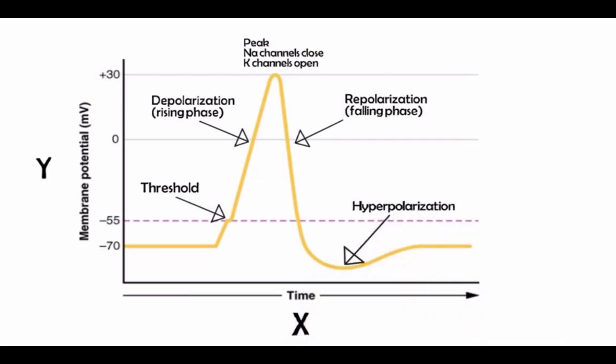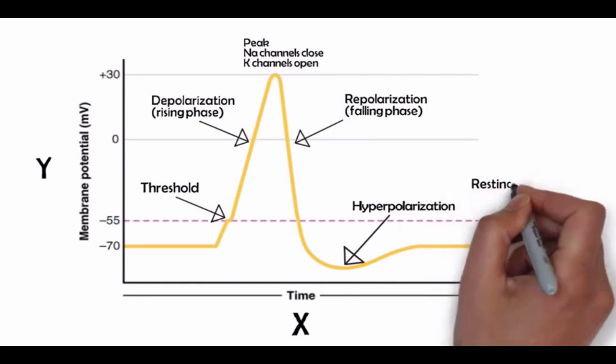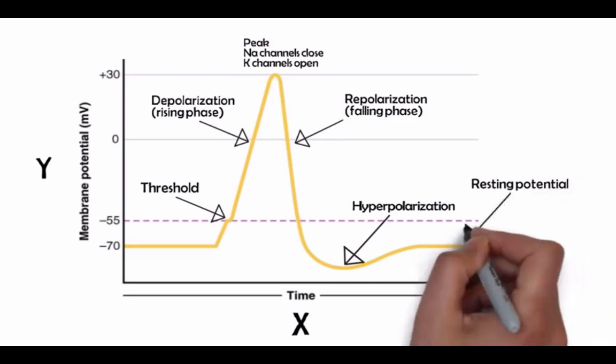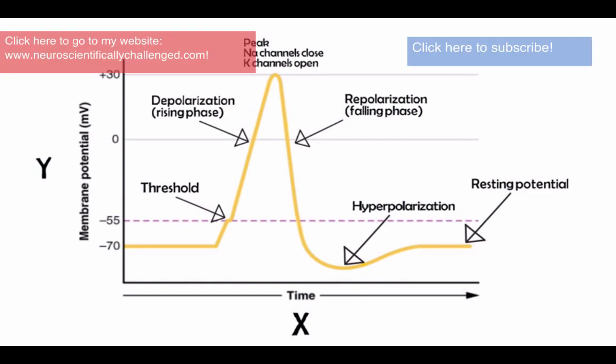During this phase, known as the refractory period, it is very difficult to cause the neuron to fire again. Eventually the potassium channels close and the membrane returns to resting membrane potential ready to be activated again. The signal generated by the action potential travels down the neuron and can cause a release of neurotransmitter at the axon terminals to pass the signal to the next neuron.